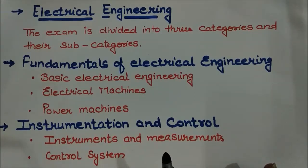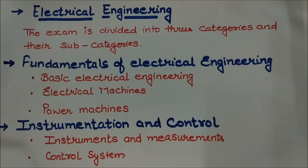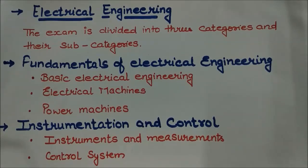The second category you have to prepare for is Instrumentation and Control. In this section you need to focus on instruments and measurements, with main focus on parameters like current, voltage, and energy along with their units. Then comes knowledge of instruments, followed by control systems — which many consider very difficult — covering important topics such as Bode plots and state space models.